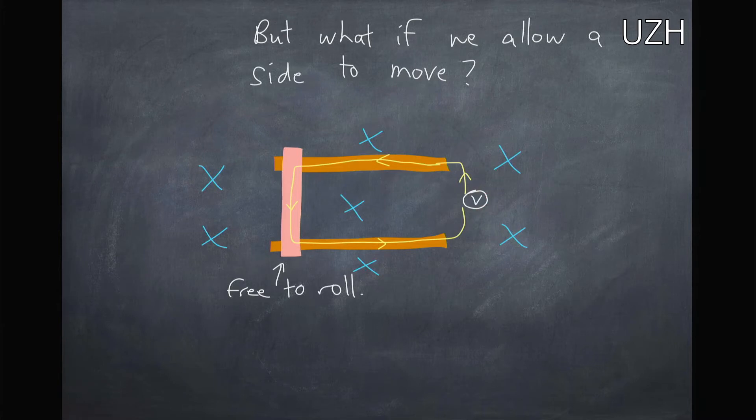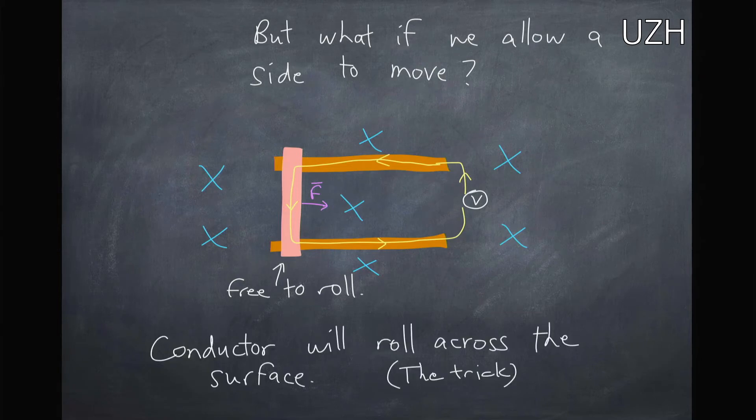when we turn on this voltage, there will be a current traveling through here, and there will be a force on this in this direction. So what it should happen is this conductor will just roll across the surface. So this is our trick, and let's see if it works.